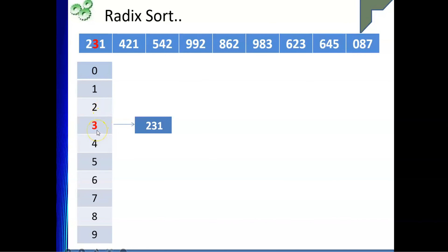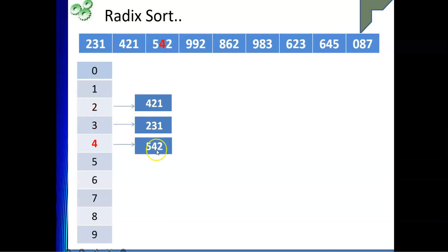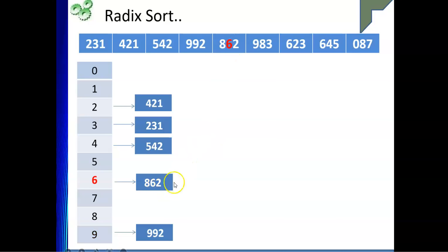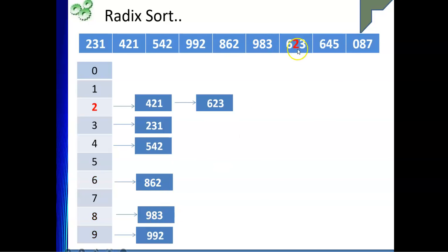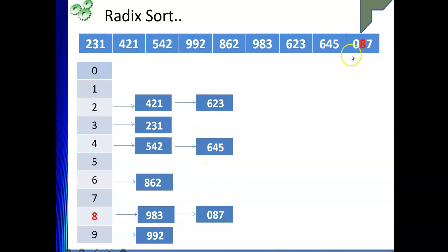Now we sort by the second digit. 231 goes into bucket 3. 421 goes into bucket 2. 542 goes into bucket 4. 992 goes into bucket 9. 862 goes into bucket 6. 983 goes into bucket 8. 623 goes into bucket 2 after 421.